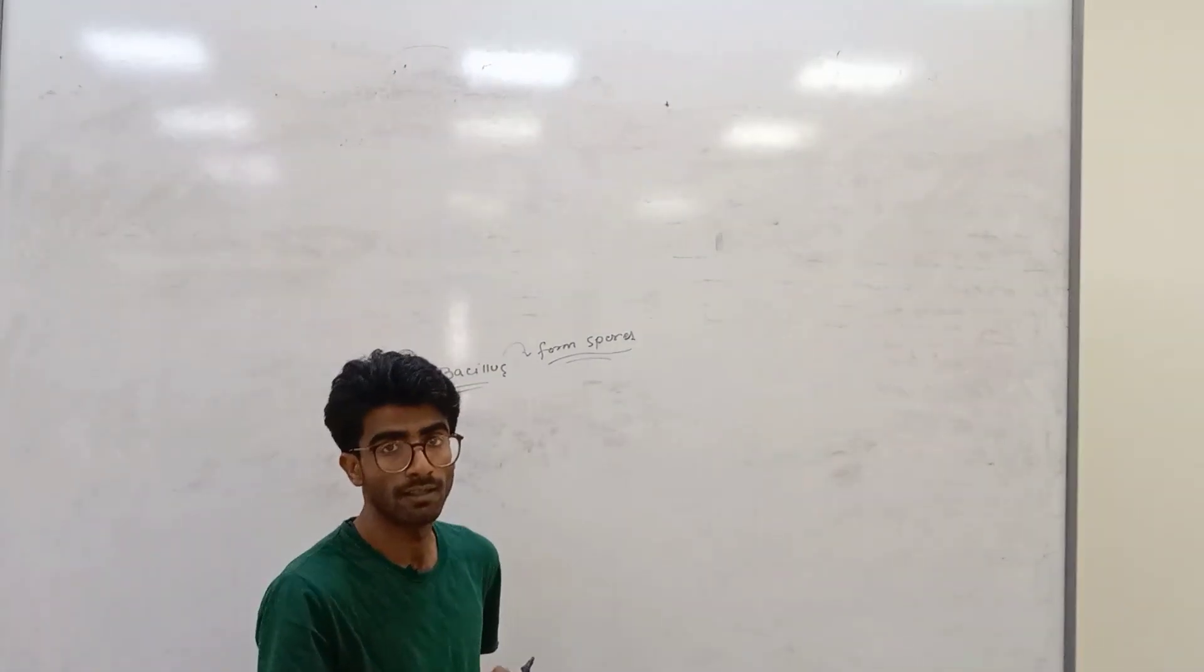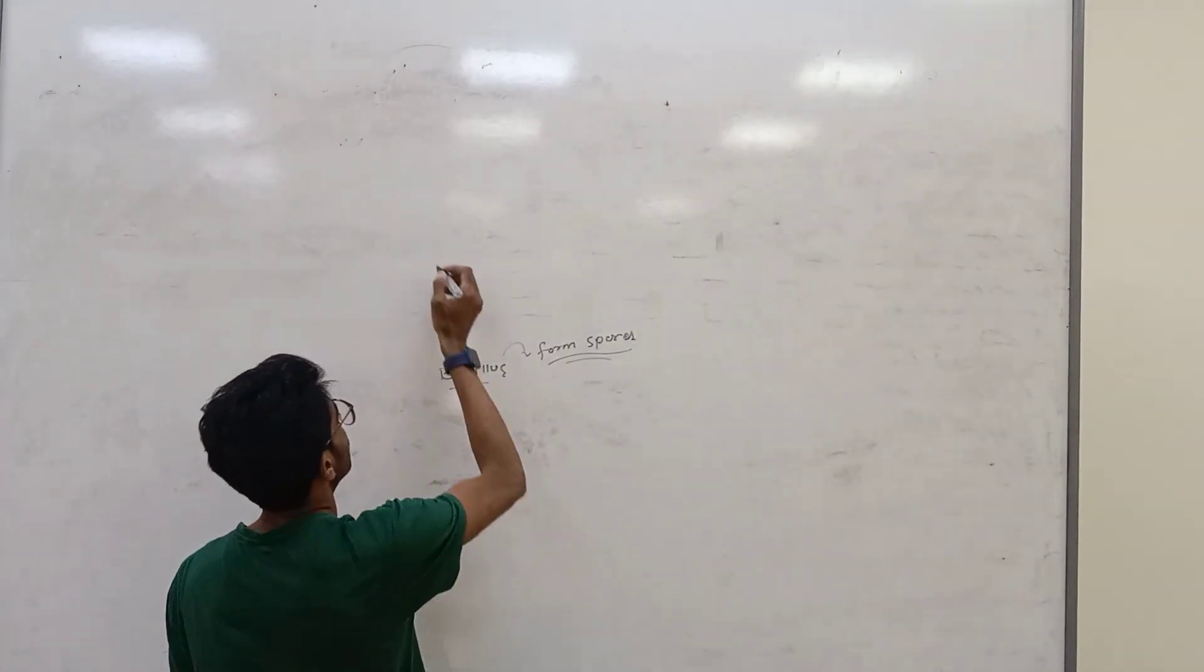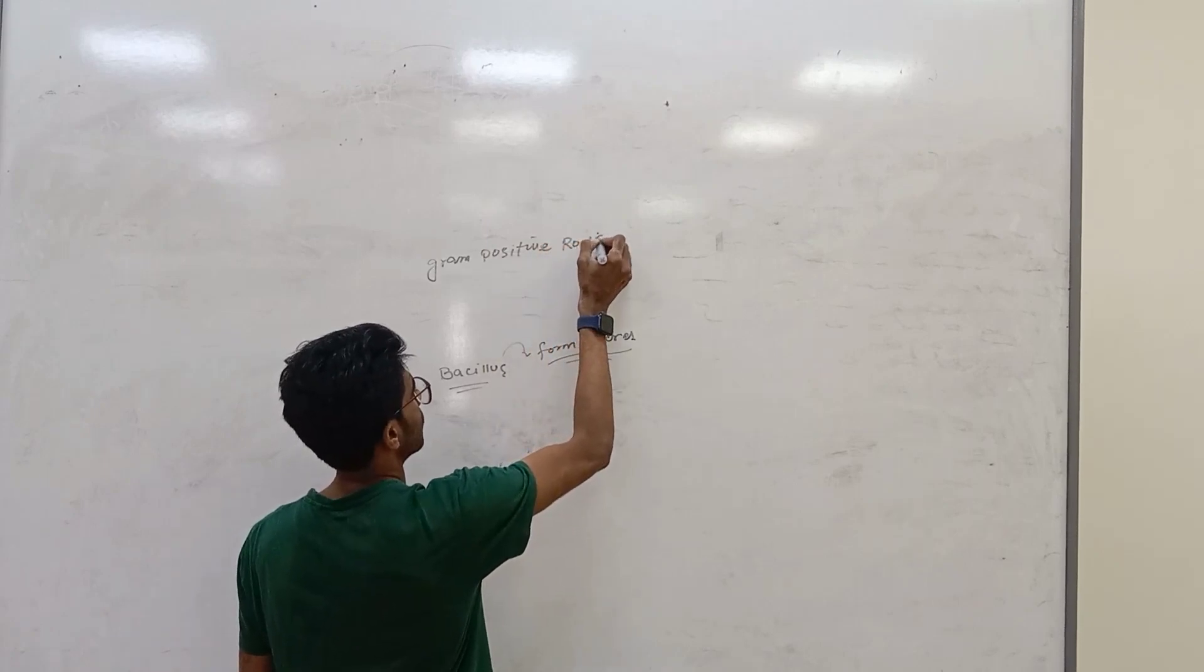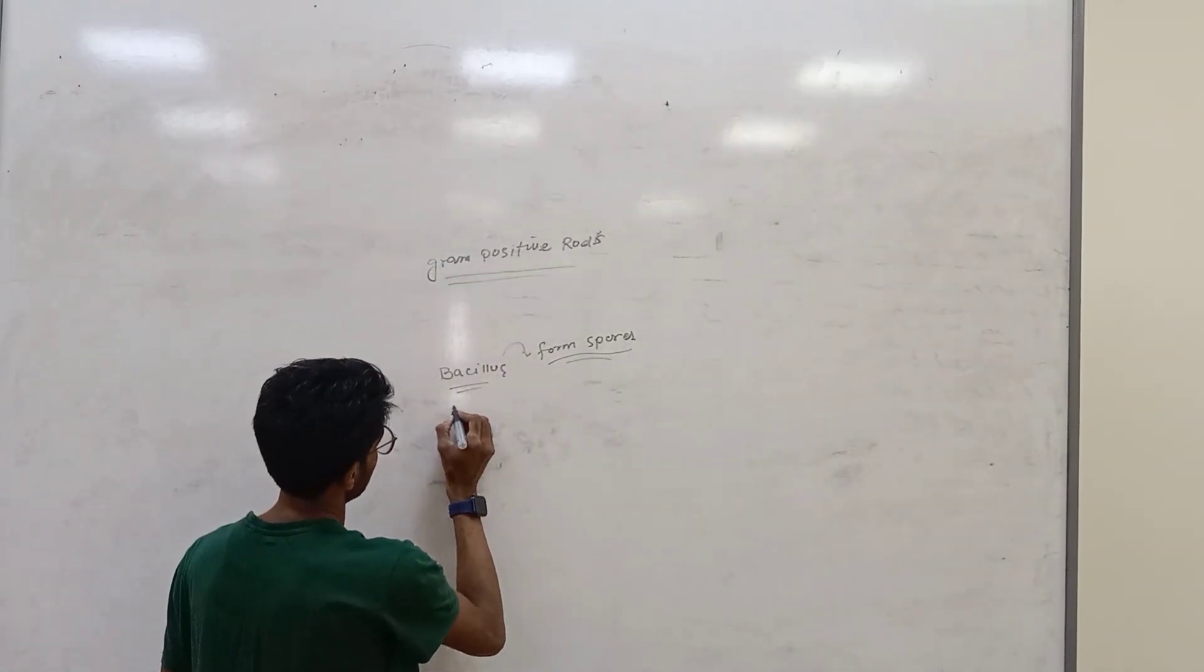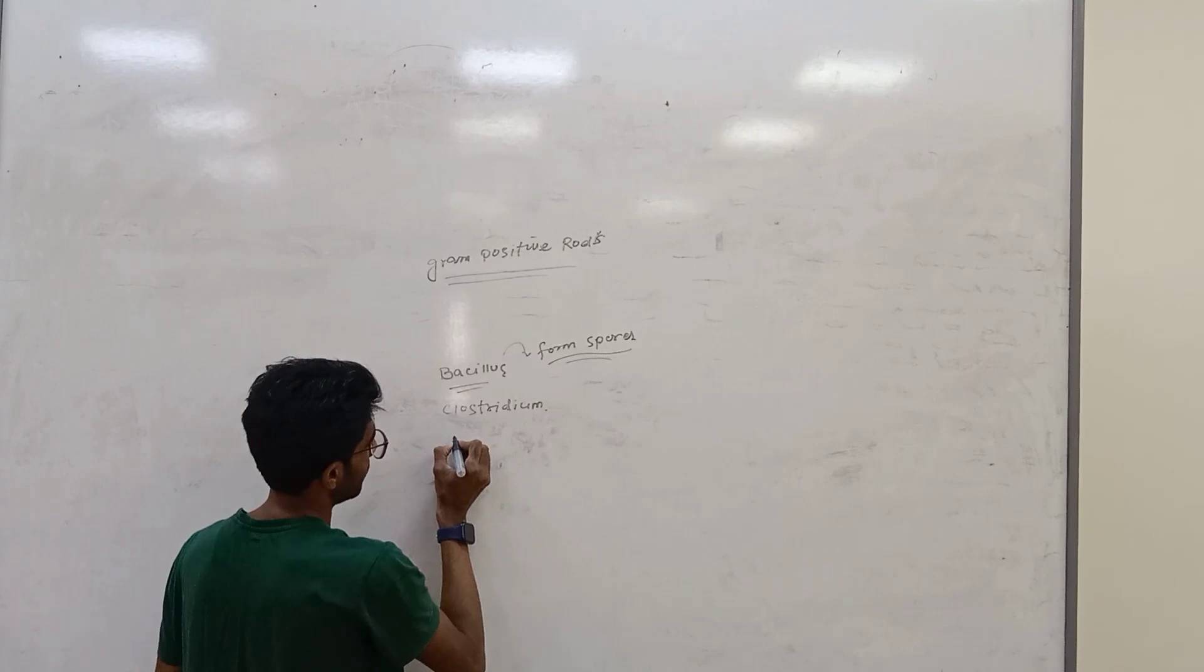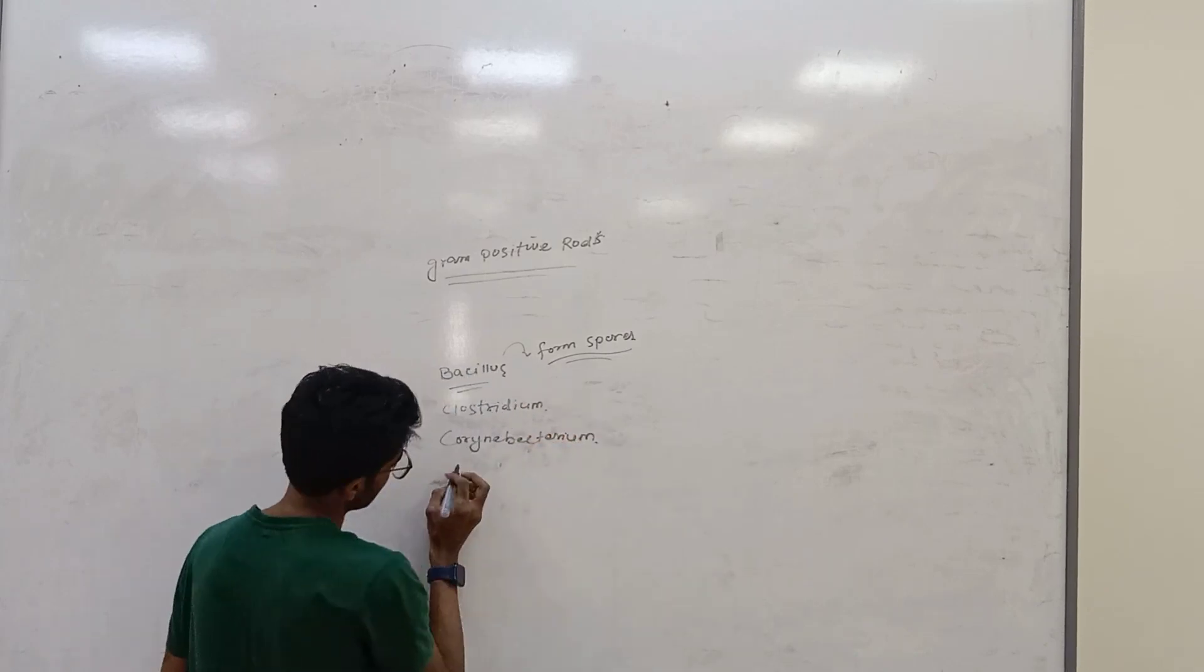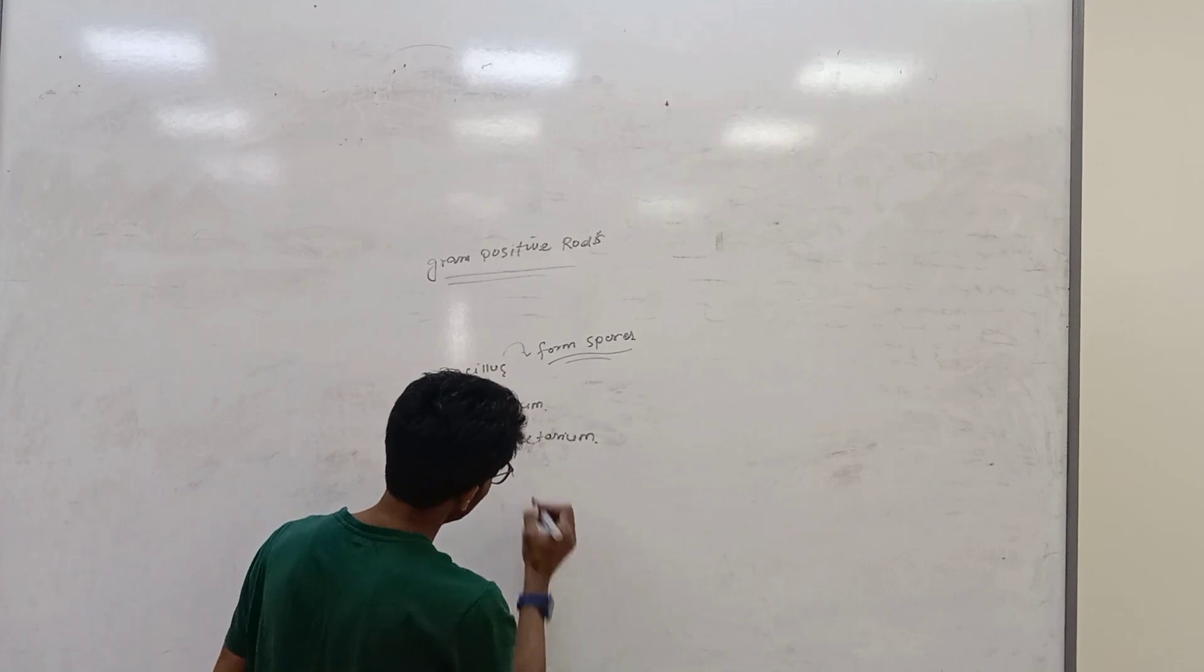Let's talk about gram-positive rods. The first one is bacillus, second one is clostridium bacterium, the third one is known as corynebacterium, the fourth one is Listeria monocytogenes, and the last one is known as Gardnerella vaginalis.